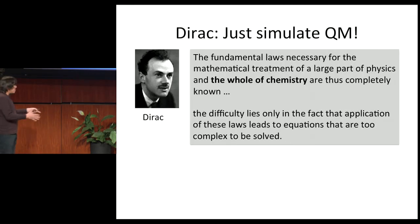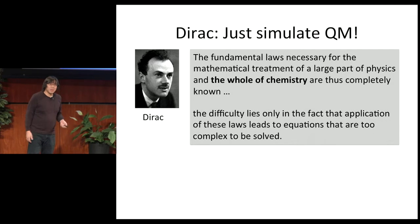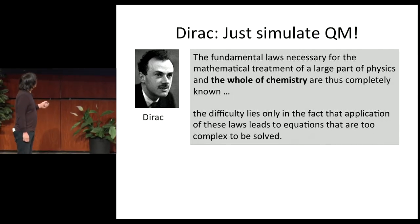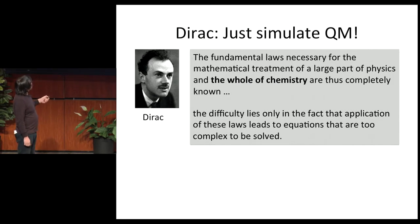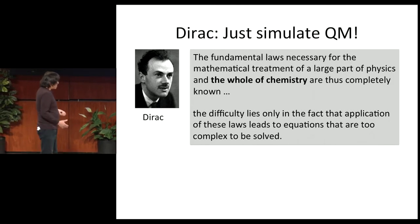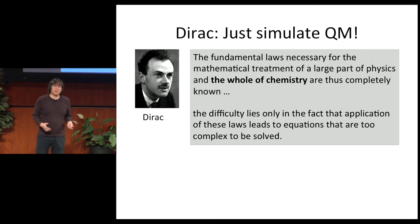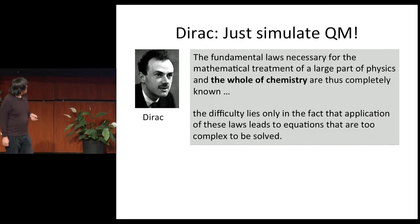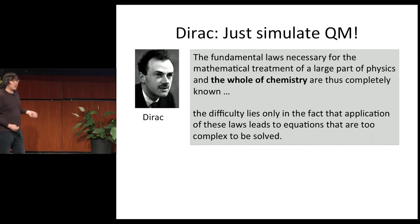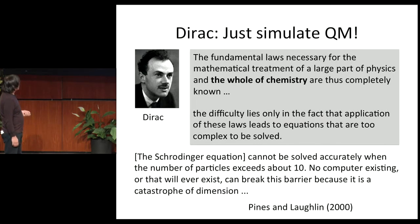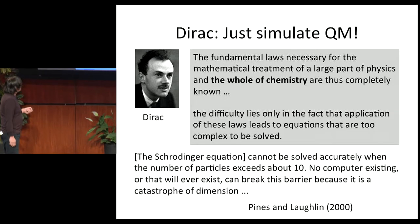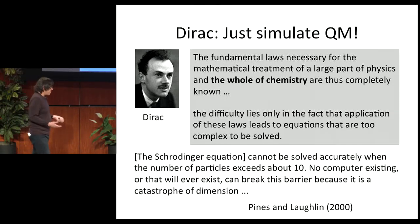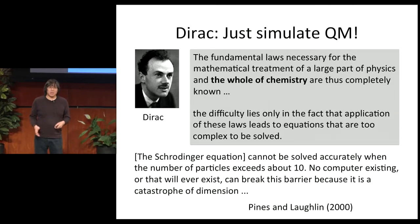In principle, the answers to these questions just come from simulating quantum mechanics. This viewpoint was already espoused by Dirac, who recognized that the fundamental laws for most of physics and the whole of chemistry are already known. But he also recognized that solving the Schrödinger equation is, in general, pretty difficult for any problem of interest. There are many pessimistic statements in the literature — the most pessimistic I could find was by David Pines and Bob Laughlin, who argued the Schrödinger equation will probably never be solved when you have more than about 10 interacting quantum particles.